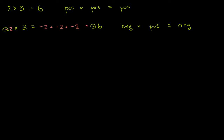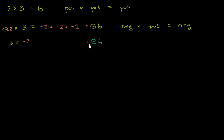Now, what if we swap the order in which we multiply? If we were to multiply 3 times negative 2, it shouldn't matter — the order in which we multiply things shouldn't change the product. Whether we multiply 2 times 3 or 3 times 2, we get 6. So 3 times negative 2 should give us the same result: it's going to be equal to negative 6. We say 3 times 2 would be 6, one of these two numbers is negative, so our product is going to be negative. So a positive times a negative is also going to be a negative.